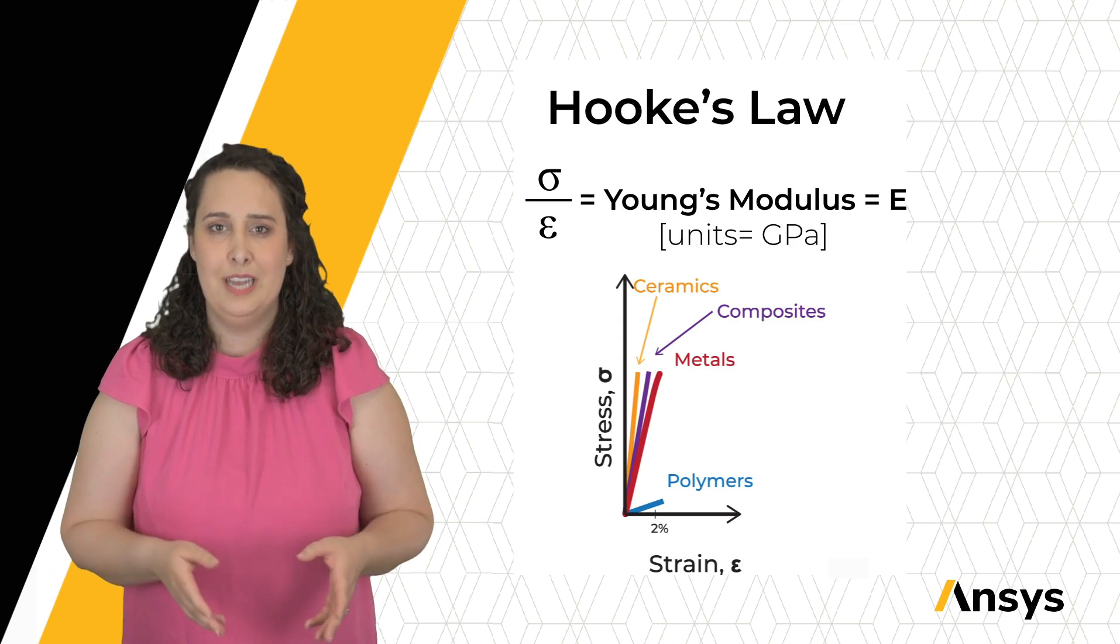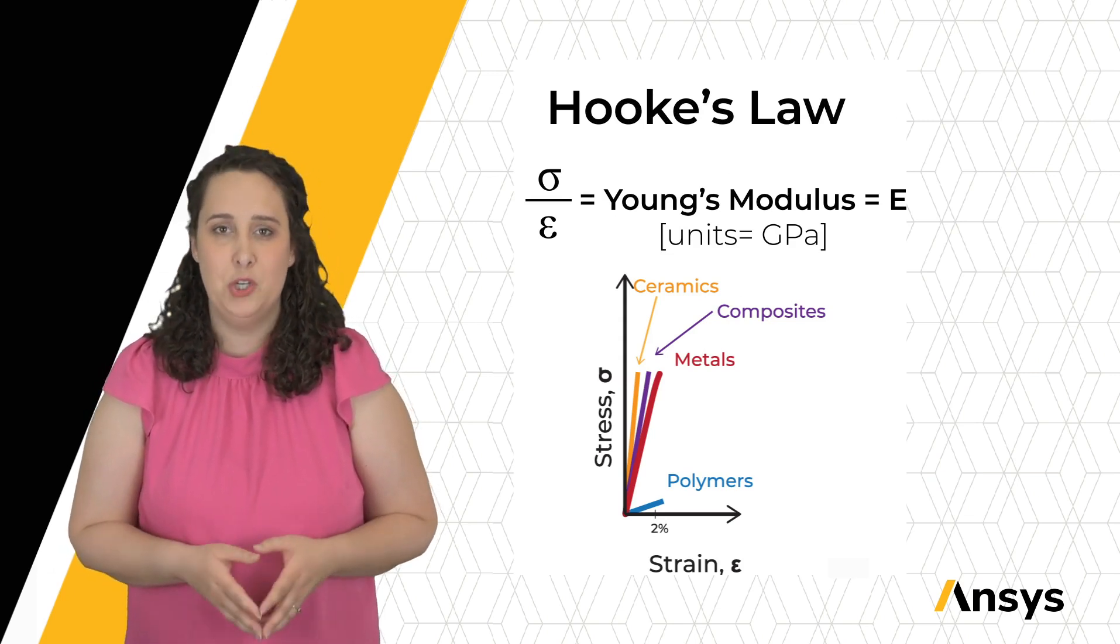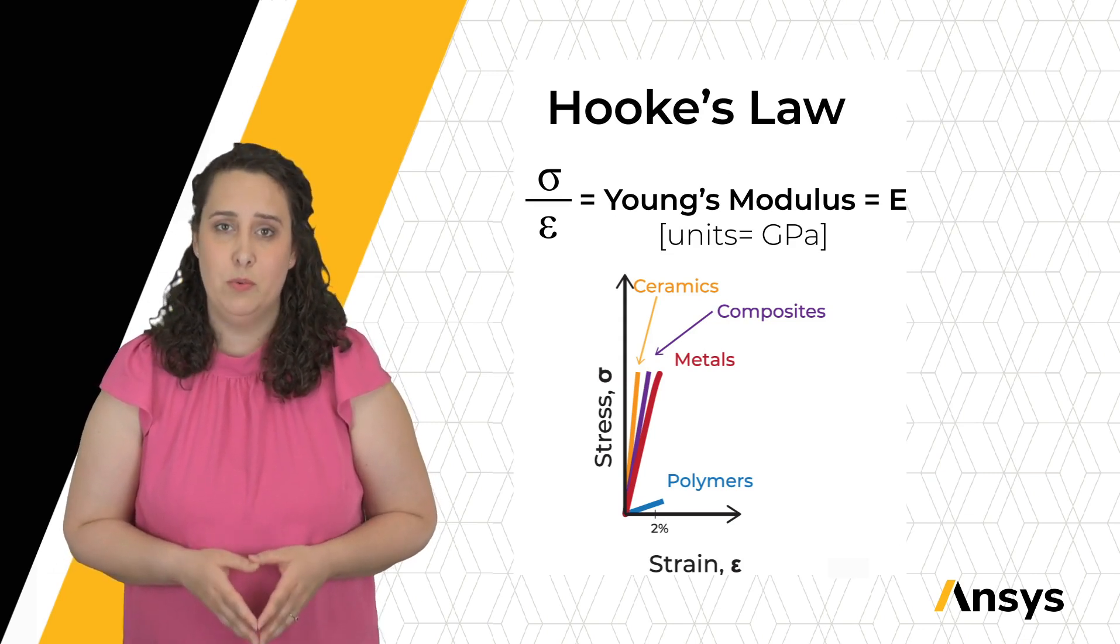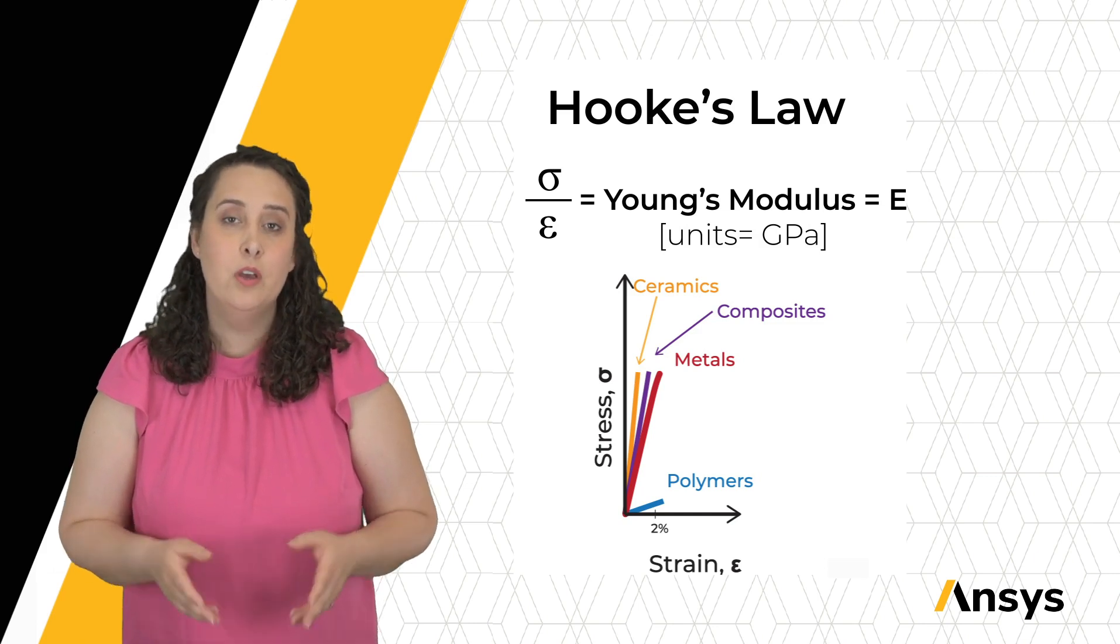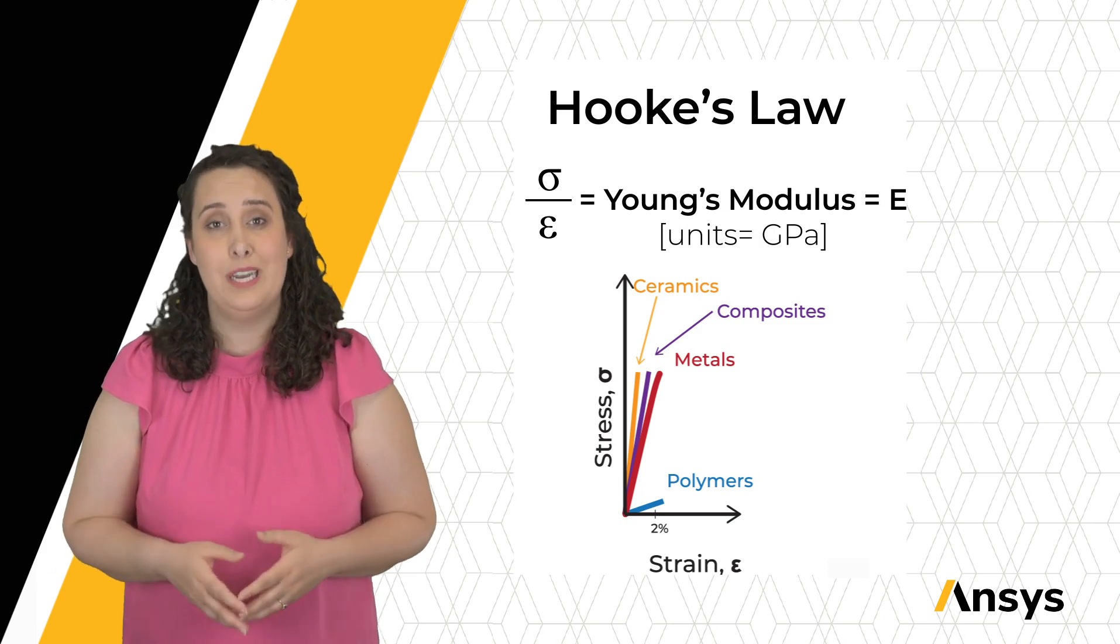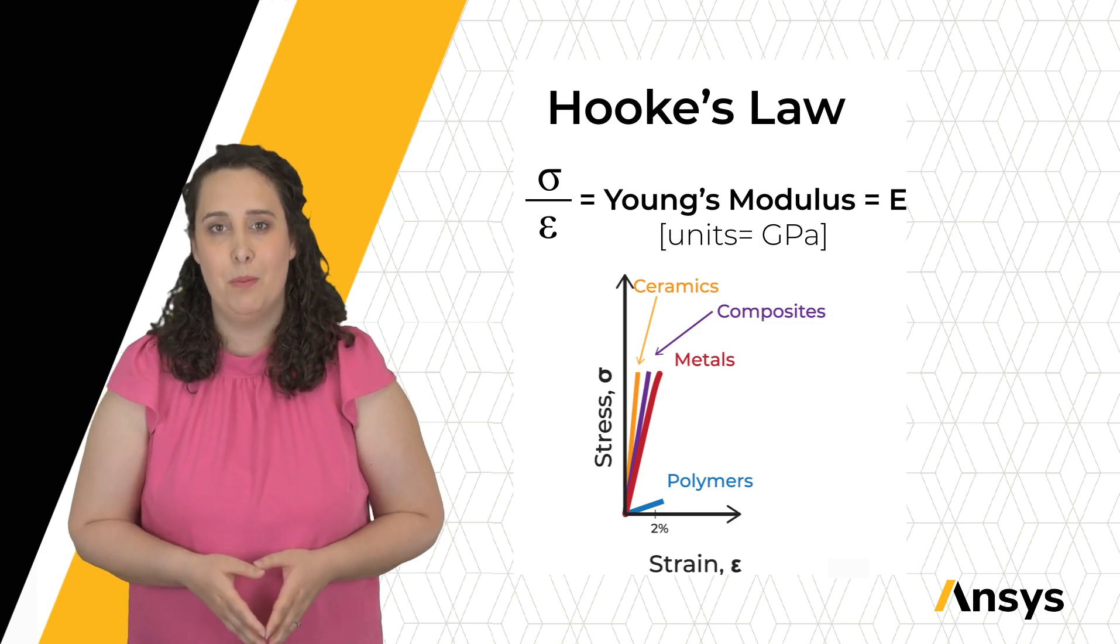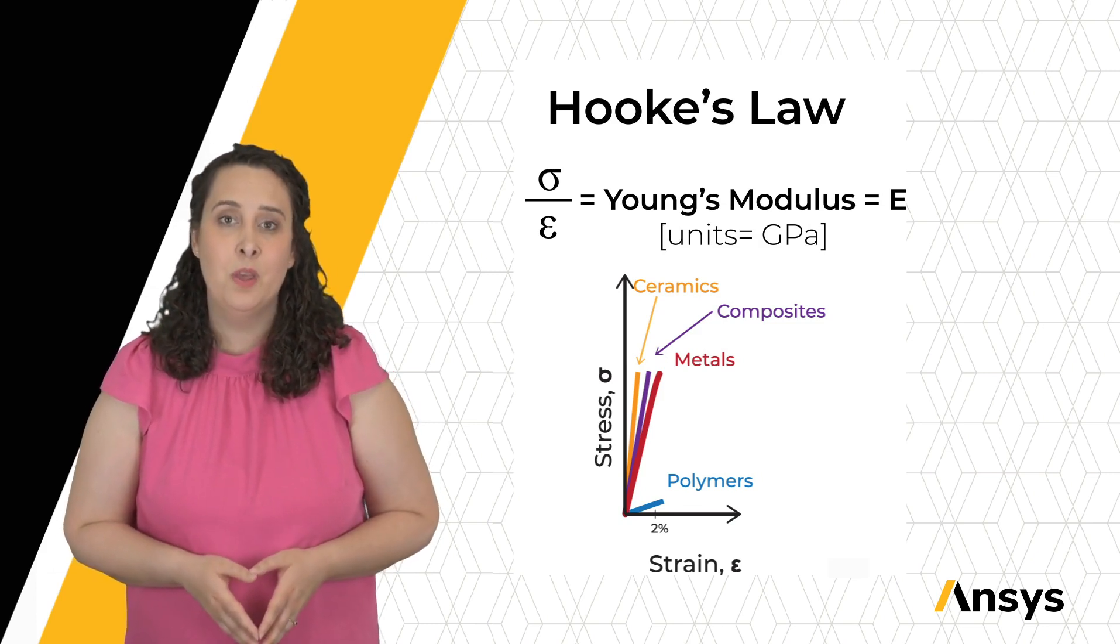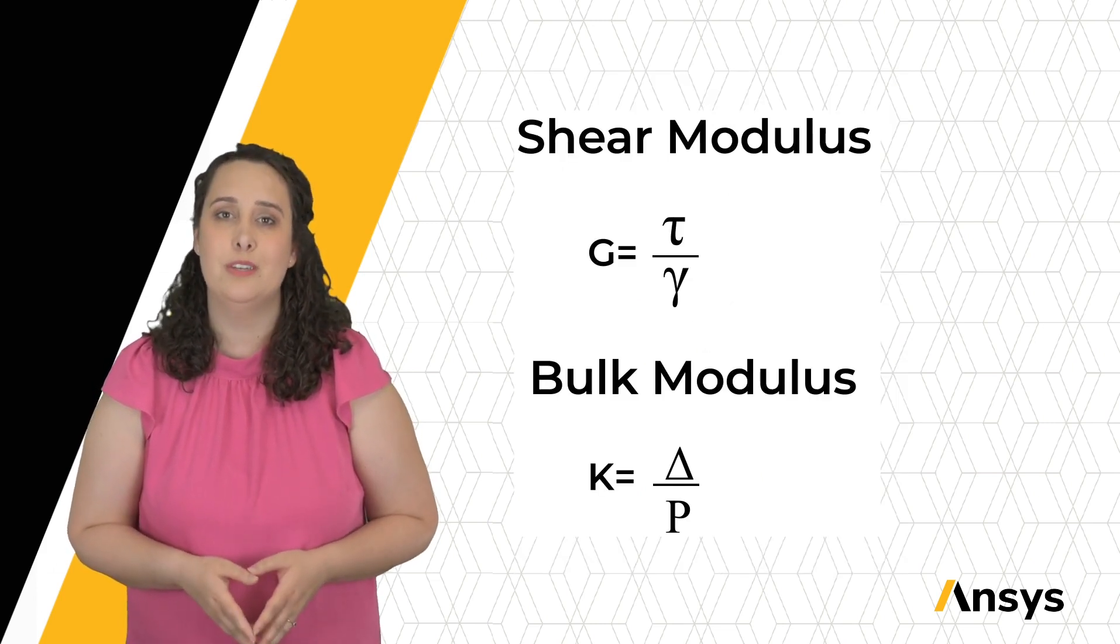If we zoom in on our elastic region, we notice that many materials follow a linear relationship between stress and strain. This is called Hooke's law and represents where I have recoverable strain in my material. Hooke's law can be represented mathematically as stress over strain equal to E or Young's modulus. Young's modulus is a crucial material property to consider when thinking about stiffness in materials.